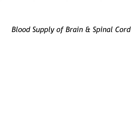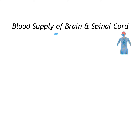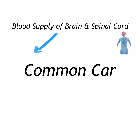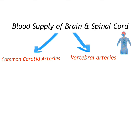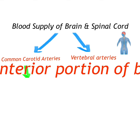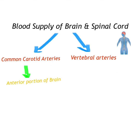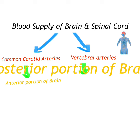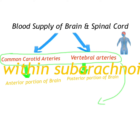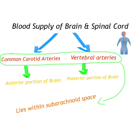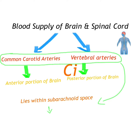Today we are going to study about the blood supply of the brain and spinal cord. The brain is supplied by the two common carotid arteries and two vertebral arteries. The anterior portion of the brain is supplied by the common carotid artery and the posterior portion by the vertebral artery. These four arteries lie within the subarachnoid space and their branches anastomose on the inferior surface of the brain to form the Circle of Willis.